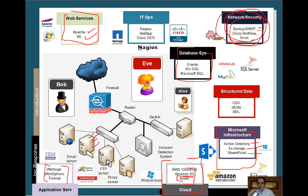For basic IT operations we have tools like Nagios, NetApp, and Cisco UCS. All this data comes in and analysts must make sense of it. Data can also come from structured sources, external sources, CSV files, JSON, and XML. These all feed into our analytics engines that need to correlate events, supported by human analysts reviewing the alerts.